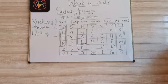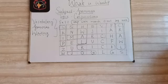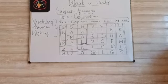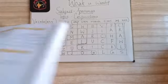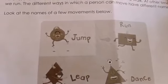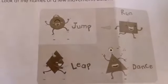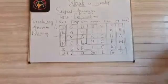Now children we will learn vocabulary. All of us move from one place to another — those are actions. Sometimes we walk, at other times we run; these different actions are called movements. You can see in this picture some actions that are movements: jump, run, leap, dance — these are all movements.